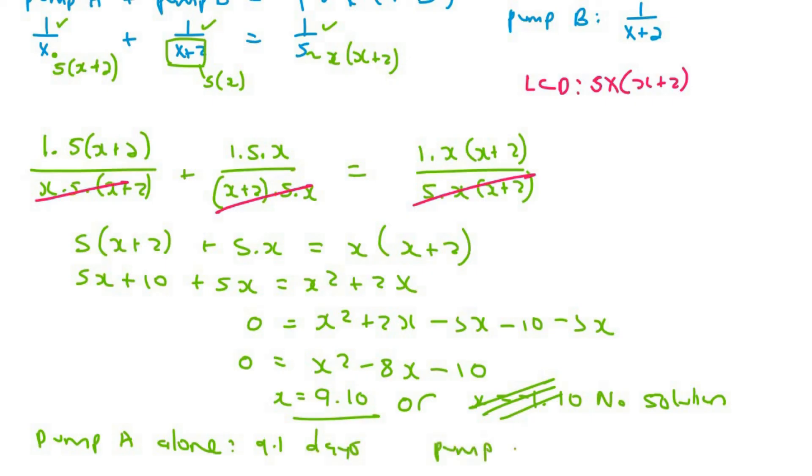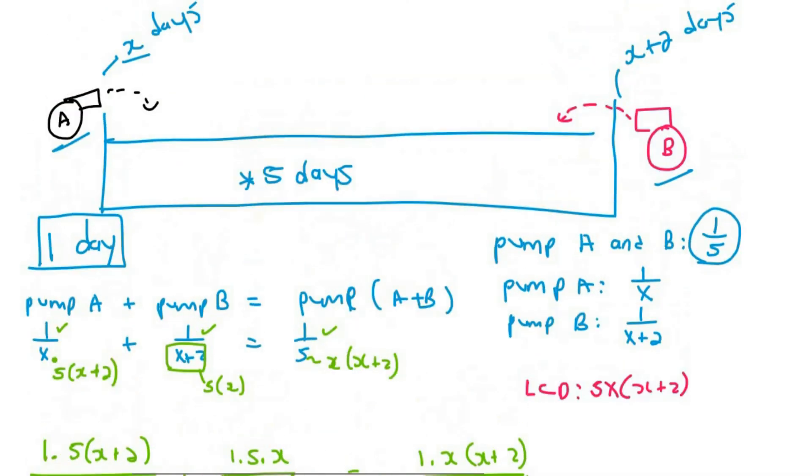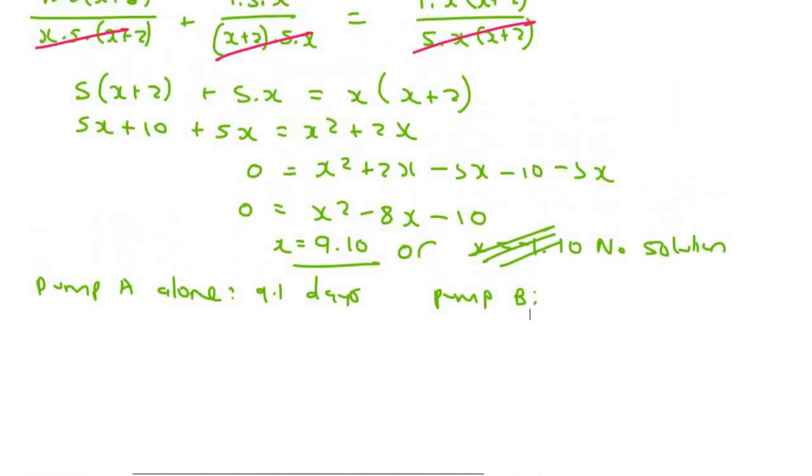So pump A alone will be nine point one days. And then pump B, if we remember correctly, pump B takes two days longer. So pump B, if it works by itself, it'll take eleven point one days. And then if they work together, then of course they take less time. And that's when they take five days. But there's the answers for this one.